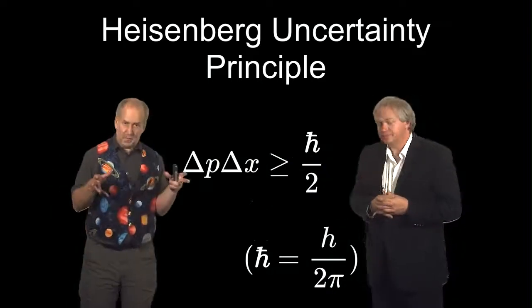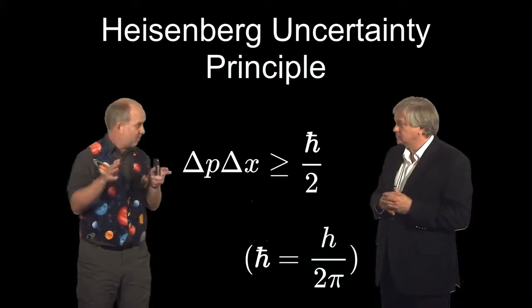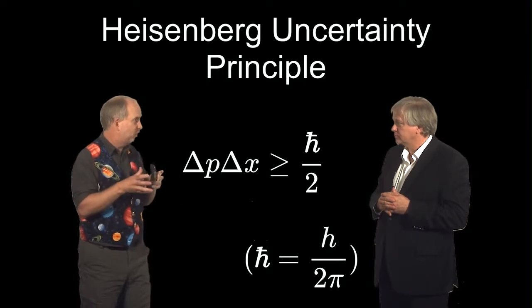This is a generic thing about waves. So if you think about it, if you've got a wave and you compress it into a small space, it must have a very short wavelength. A short wavelength means lots of energy, so it's going to be moving like crazy.